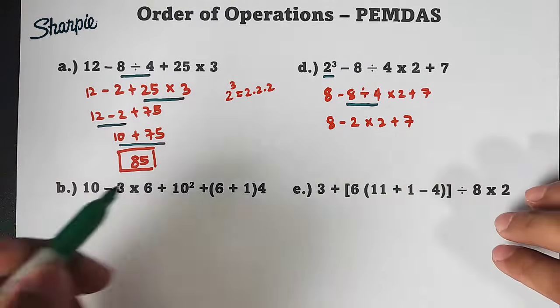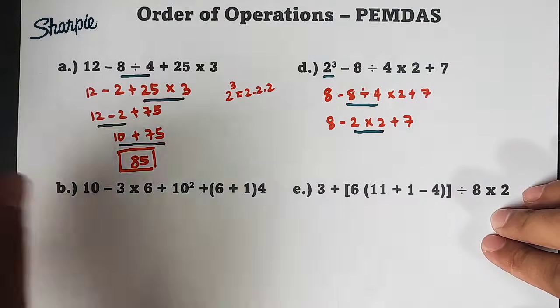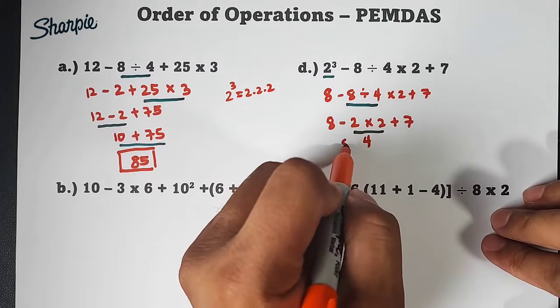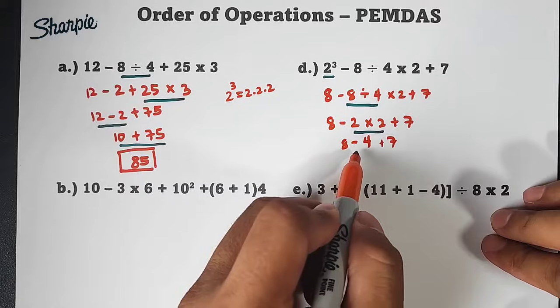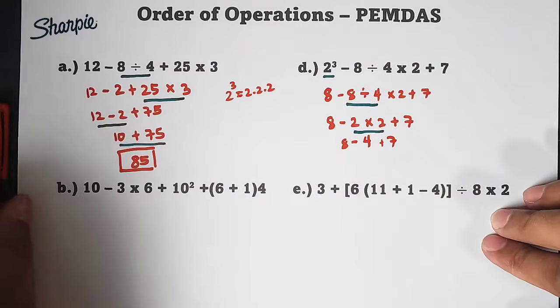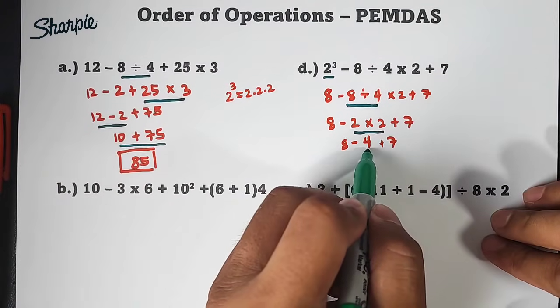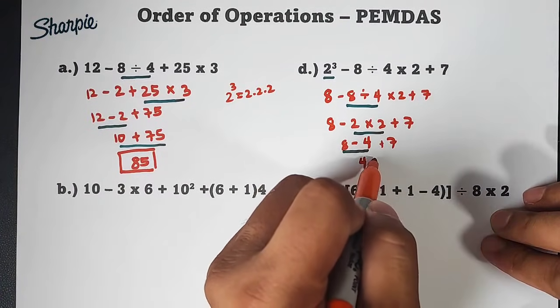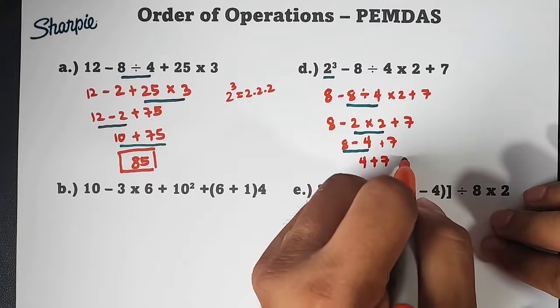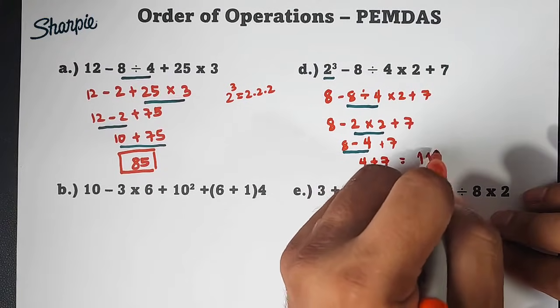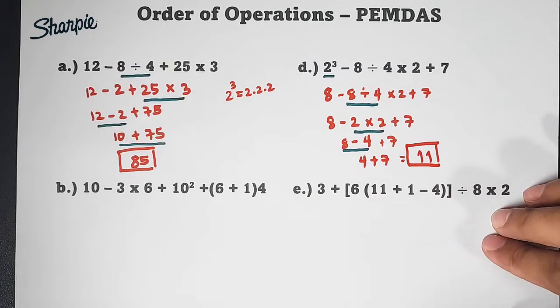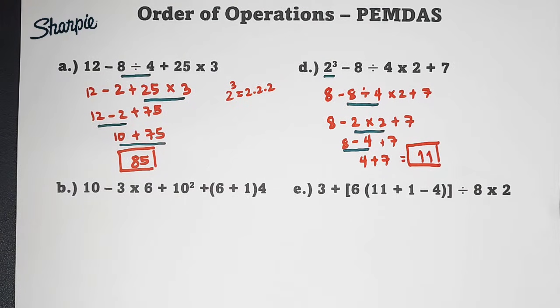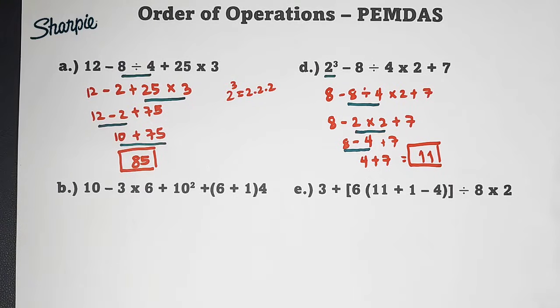So three operations left. We'll do multiplication first. 2 times 2 is 4. So this is 4. 8 minus 4 plus 7. Here, let's do it step by step so you get used to it. We'll do subtraction first which is 8 minus 4. That is 4 plus 7. And that will give us the answer of 11. This is our answer for letter D. So letter A and D are basic examples of using PEMDAS.